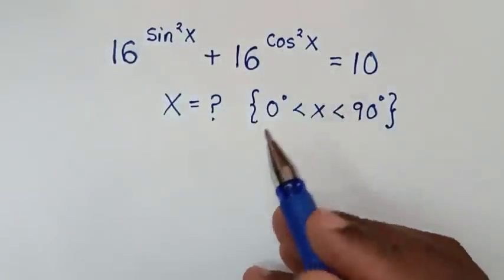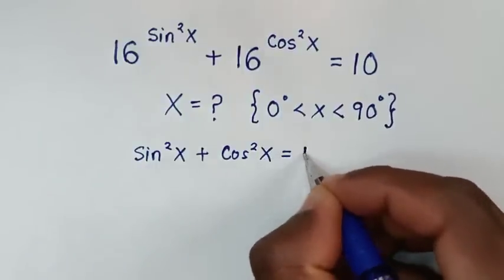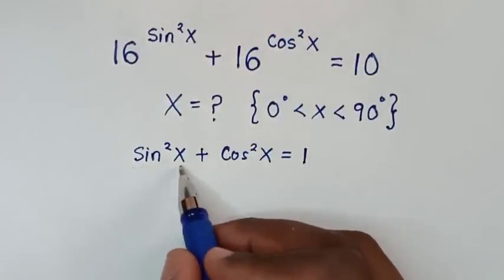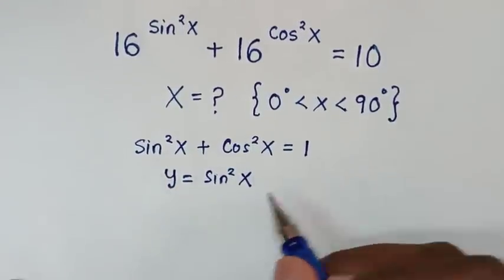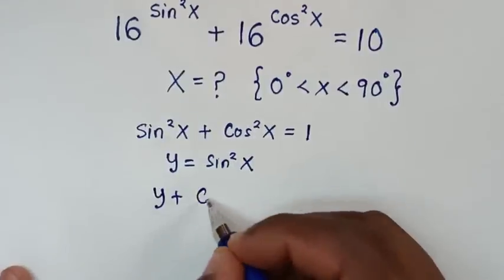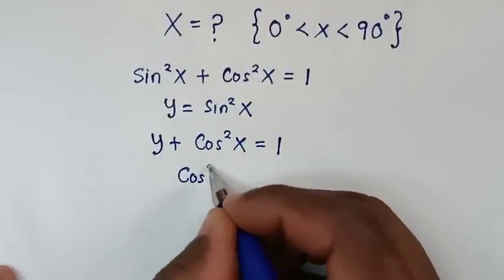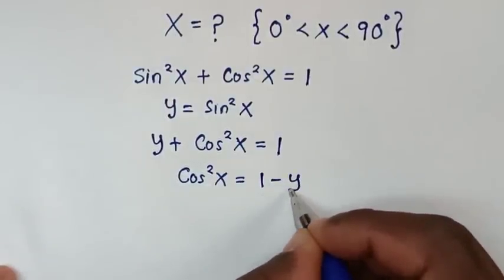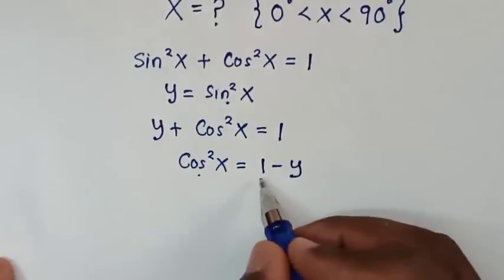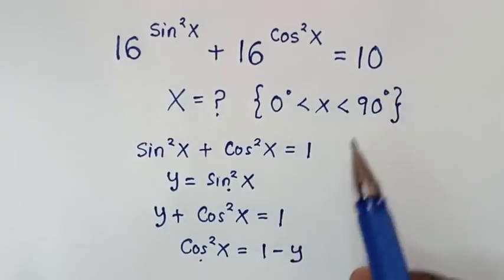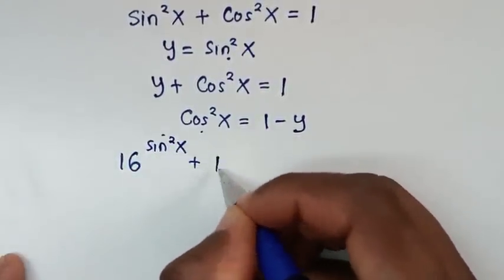From this, our powers are sin squared x and cos squared x, so we'll apply the trigonometric rule which is sin squared x plus cos squared x is equal to 1. Then we'll let sin squared x equal y. So when y equals sin squared x, this rule becomes y plus cos squared x equals 1, and therefore cos squared x equals 1 minus y.